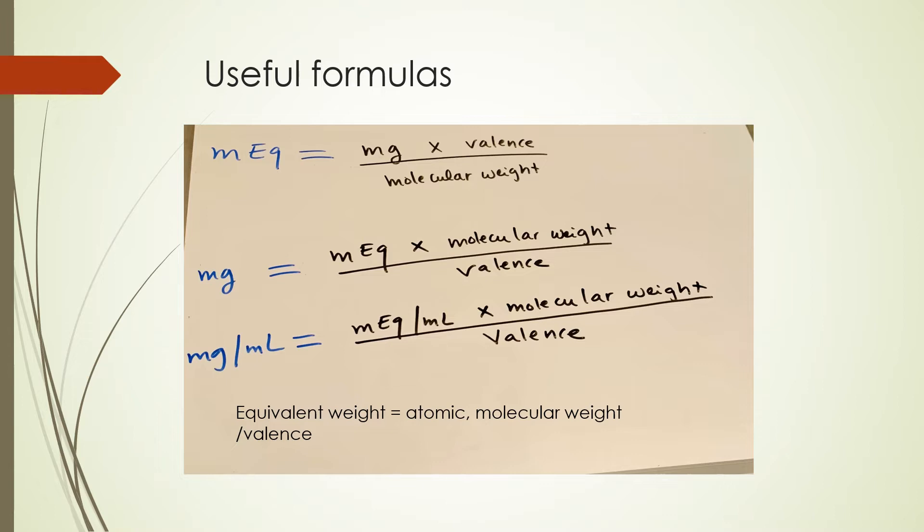Now, the last formula: the milliequivalent weight is the molecular or atomic weight divided by the valence. In the next slide, you will see how you can either use the first formula when looking to find milliequivalent in a problem, or you can use the last formula to find the milliequivalent weight and then use ratio and proportion to find the milliequivalent. I'll explain in further detail what I mean by that.